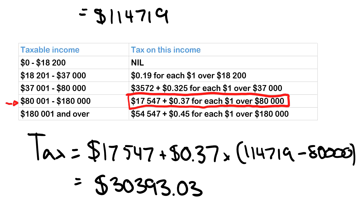For example, if you were looking at the second bracket, you would have $3,575 plus 0.325 times every $1 over $37,000 — that is, how much you've earned minus the $37,000. That's how you use this table.